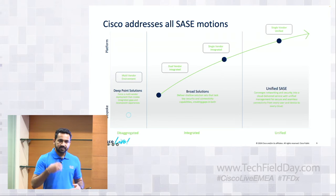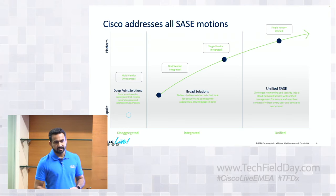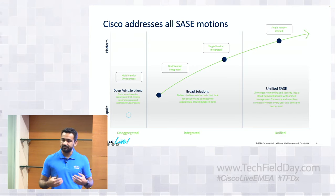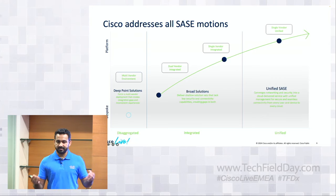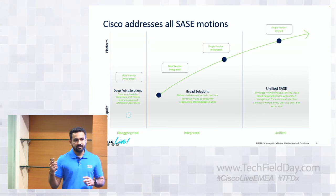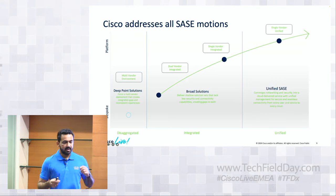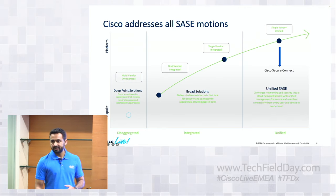From there, the evolution continued into single-vendor integrated SASE. What that means is someone like Cisco — we have SD-WAN solutions and we also have SSE solutions. Customers who prefer this direction just come to one vendor and say, provide me everything. The peak is the single-vendor unified SASE solution — basically, how can I buy one platform from one vendor and do everything on that. This is where Secure Connect plays the role — Cisco Secure Connect, our unified single-vendor SASE solution.